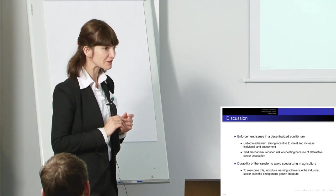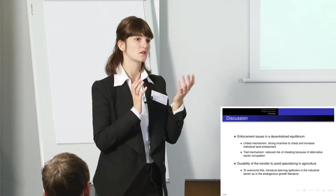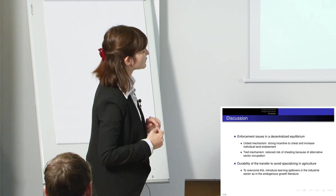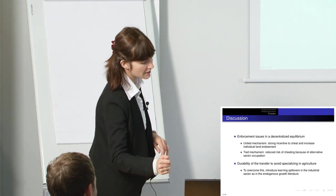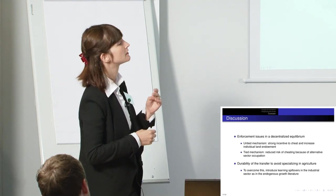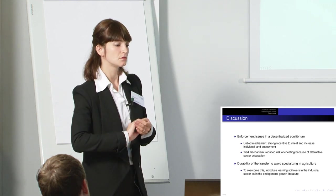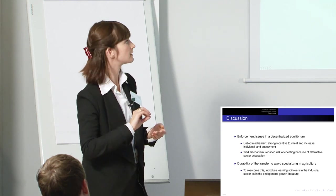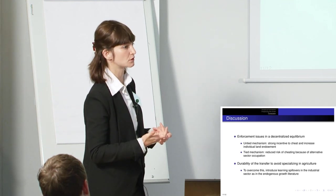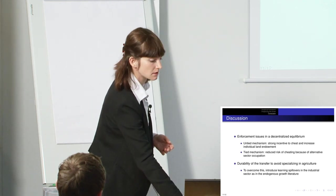So just a little bit of discussion. There is a problem of enforcement here when you want to decentralize the equilibrium. And maybe if you have a more diversified economy, there will be less need for enforcement. So that's one potential benefit that is not taken into account in the model.